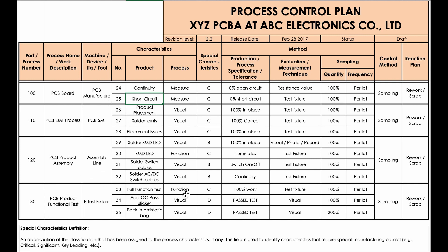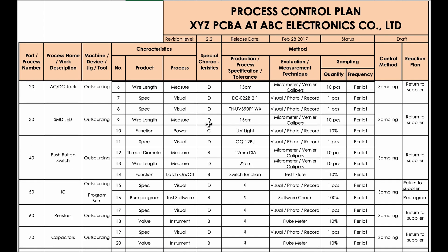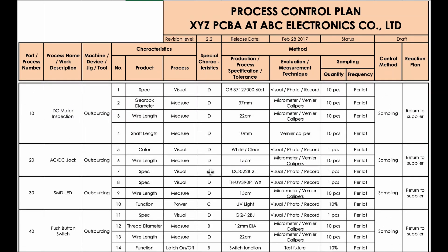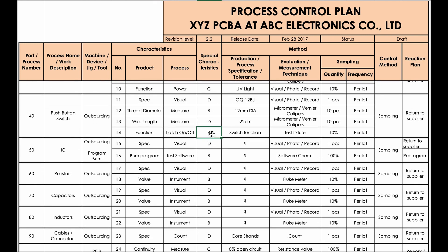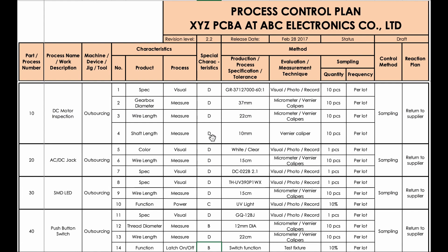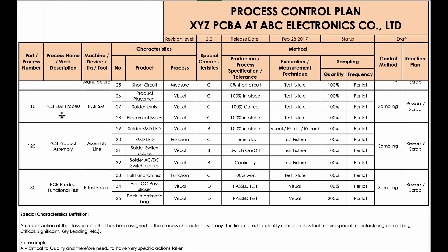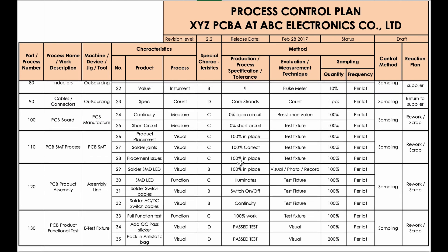The idea is to have everything on the same plan and to have a view of what is really important — A being critical, B already pretty important. Once we have a view of all the components, all the process steps, and all their controls, it can be adjusted if needed, and then typically translated into work instructions for the operators, inspectors, and the people doing the testing. That's an example of a process control plan.